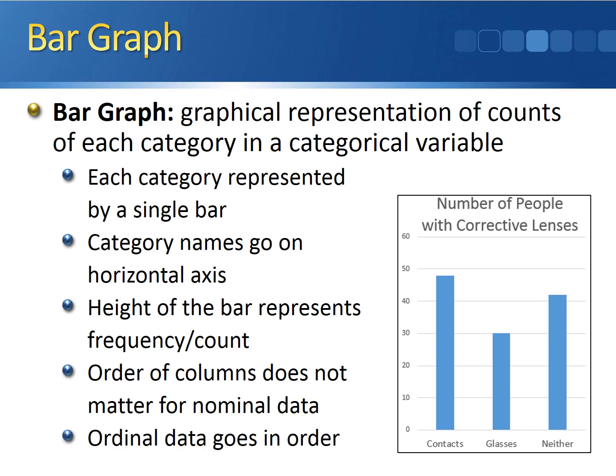If you have an ordinal variable — for example, a restaurant survey asking people to rate food as poor, fair, good, or excellent — you would want those categories in that exact order when creating your bar graph.